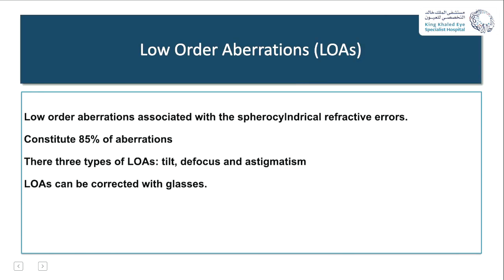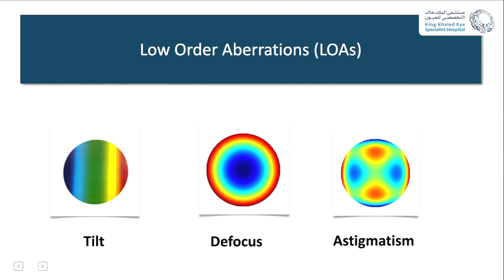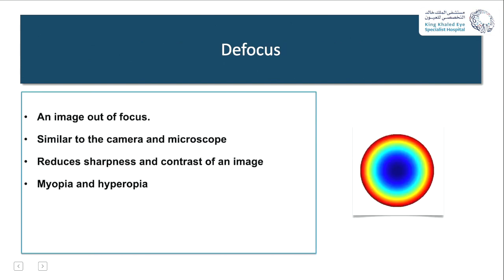Low order aberrations are associated with sphero-cylindrical refractive error and constitute up to 85% of aberrations. The three types are: tilt, which is insignificant and constant for everyone; defocus, which encompasses myopia and hyperopia; and astigmatism. Low order aberrations can be corrected easily with contact lenses and glasses. Defocus is basically an image which is out of focus, similar to what we see with cameras and microscopes.